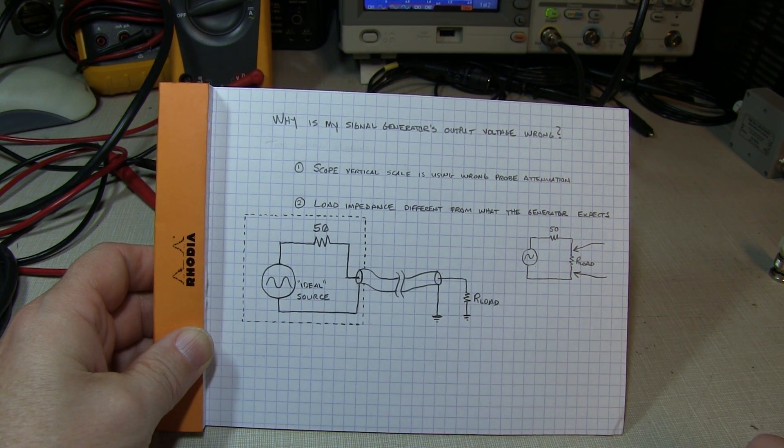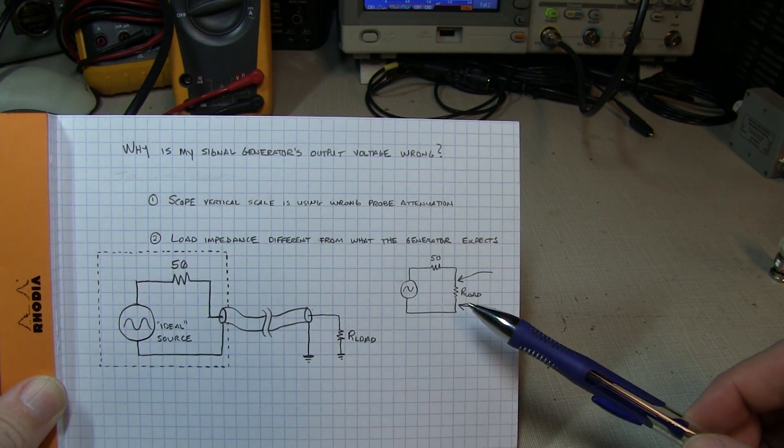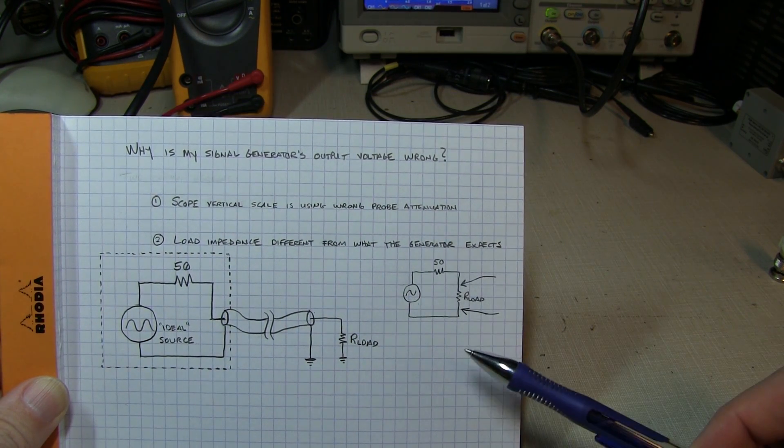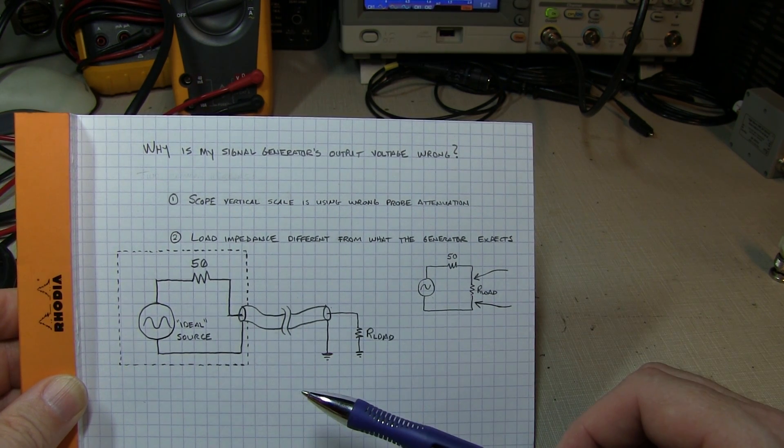And if you don't load with a 50 ohm load, then the output voltage won't be the same because the generator has no idea. You can think of it as this kind of pretty simple circuit here, a simple voltage divider.